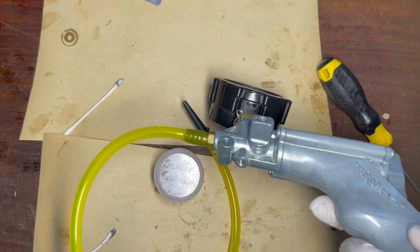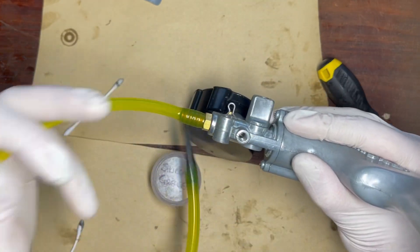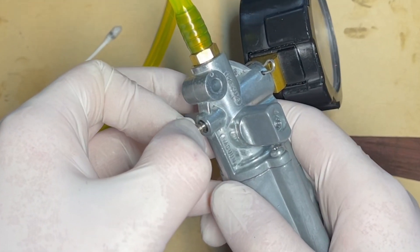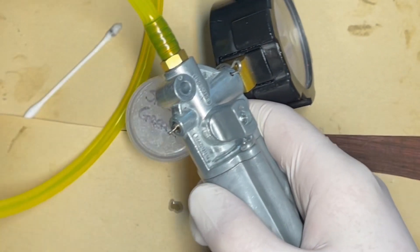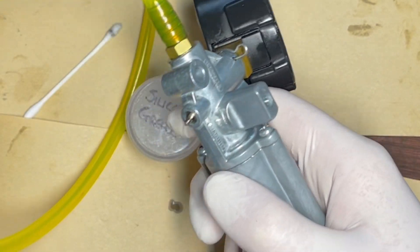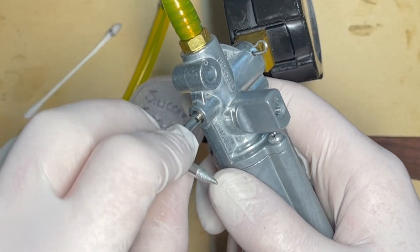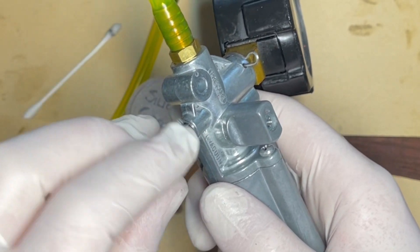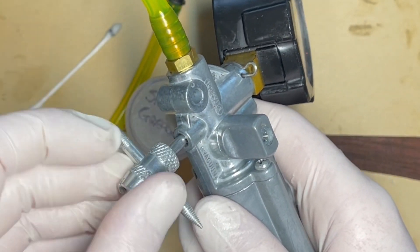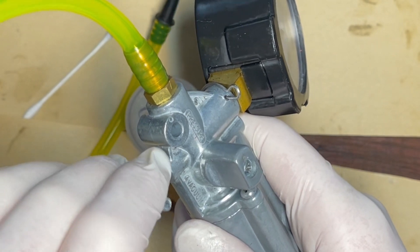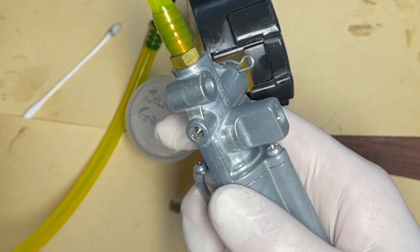Then what we need to do is to reassemble the Schrader valve. Again, comes in the kit. So Schrader valve now goes inside. Gently press. Use the Schrader valve tool and go up until it's just lightly snug. That's all you need. Don't over tighten this. So that's now snug.